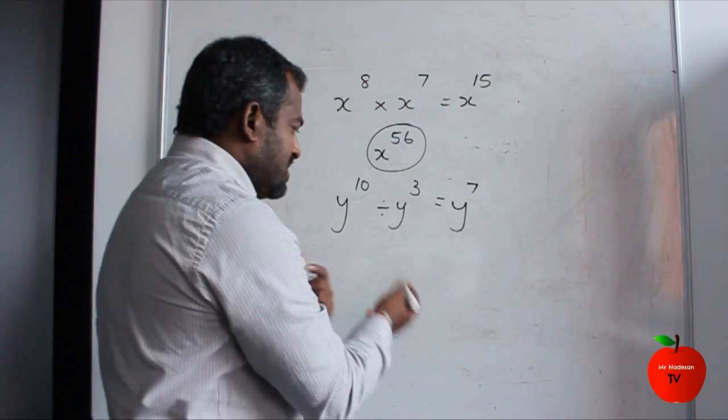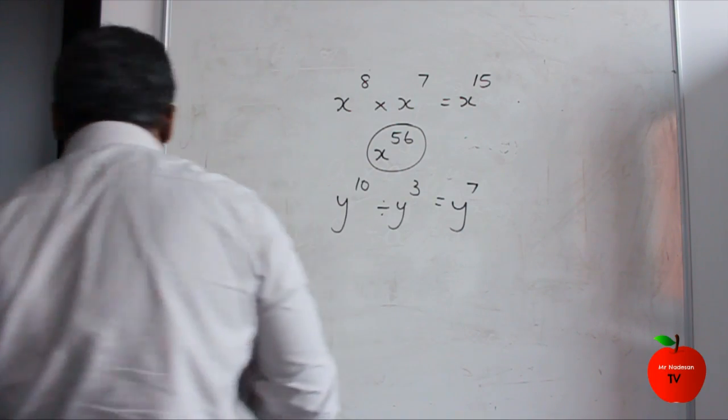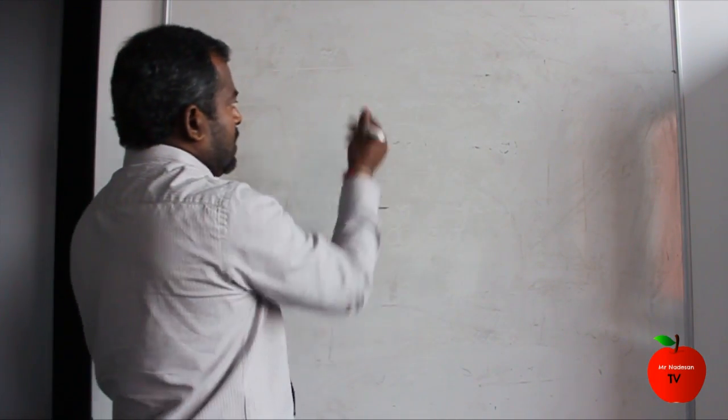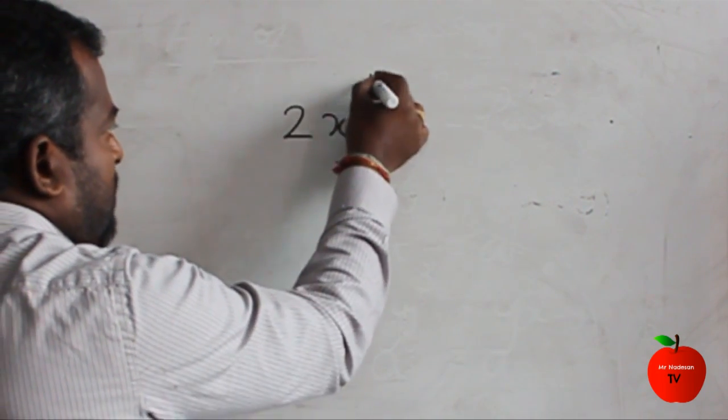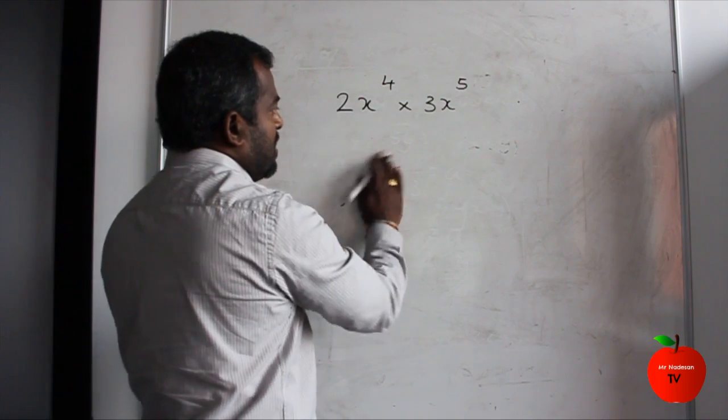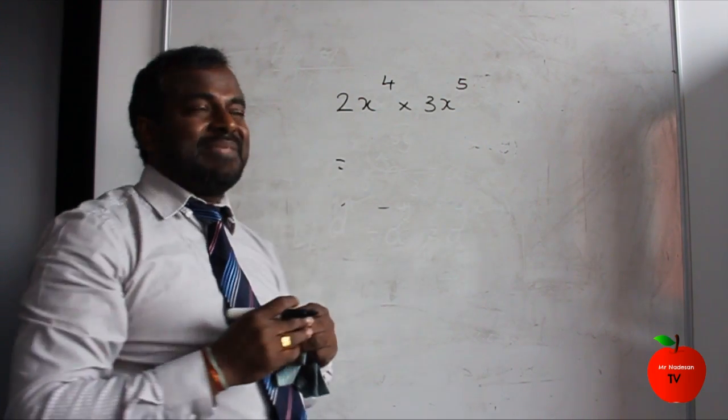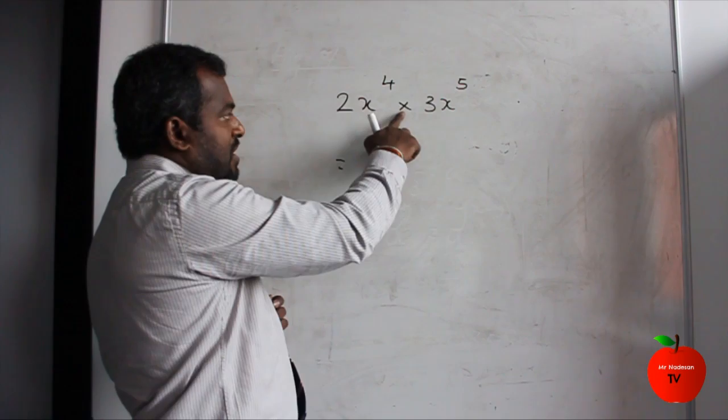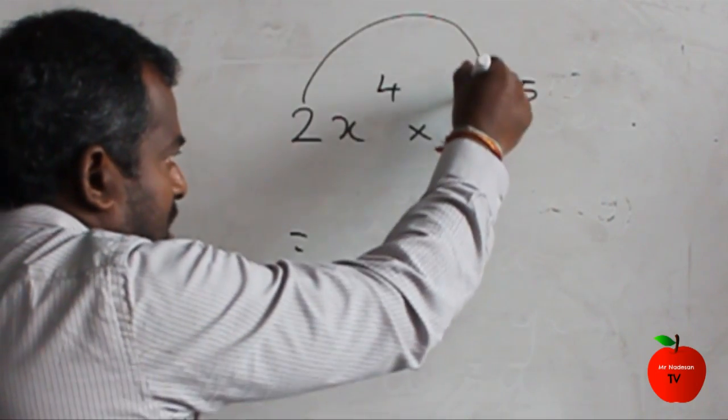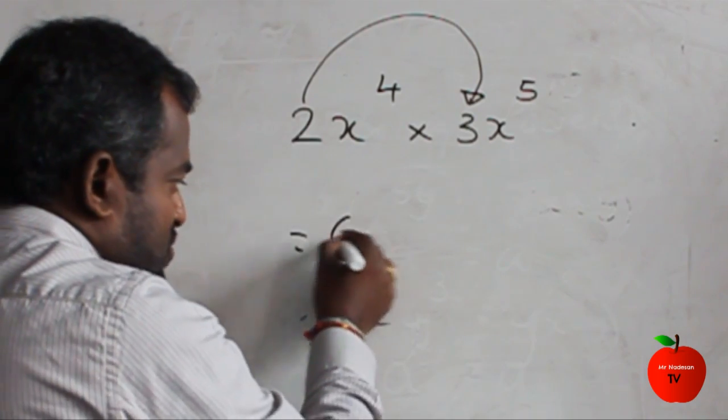and then we'll see a more challenging one. Let's say this question: 2x to the power 4 times 3x to the power 5. Now we've got numbers and letters. For the numbers, we've got 2 times 3. Work that out first: 2 times 3 equals 6.